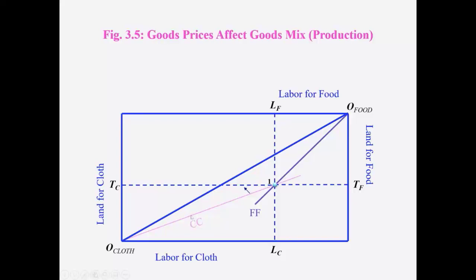An easy way of doing that is, guys, if there is increase in land by labor ratio, this line moves towards the land axis. If it is a decrease in T by L, that means an increase in L by T, it would move more towards the labor axis.